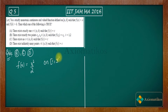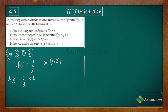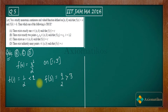We see f(1) = 1/2, which is less than 1 — satisfying f(a) < a. Also f(3) = 9/2 = 4.5, which is greater than 3 — satisfying f(b) > b. This is a strictly increasing function since f'(x) > 0, and it satisfies both conditions given in the question.